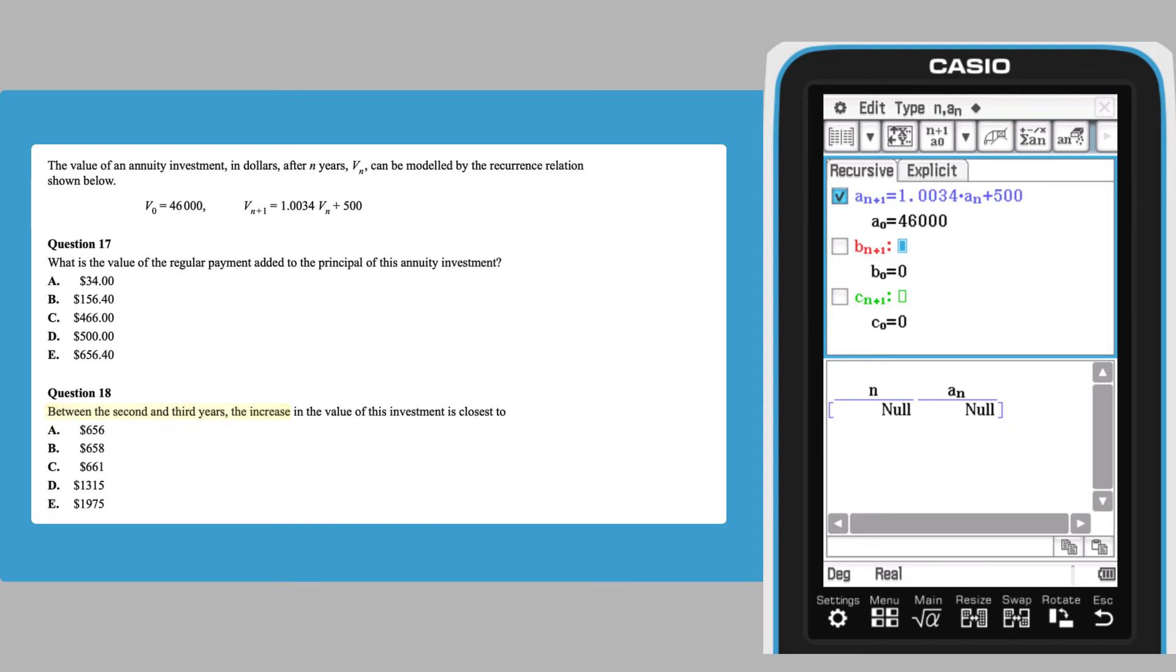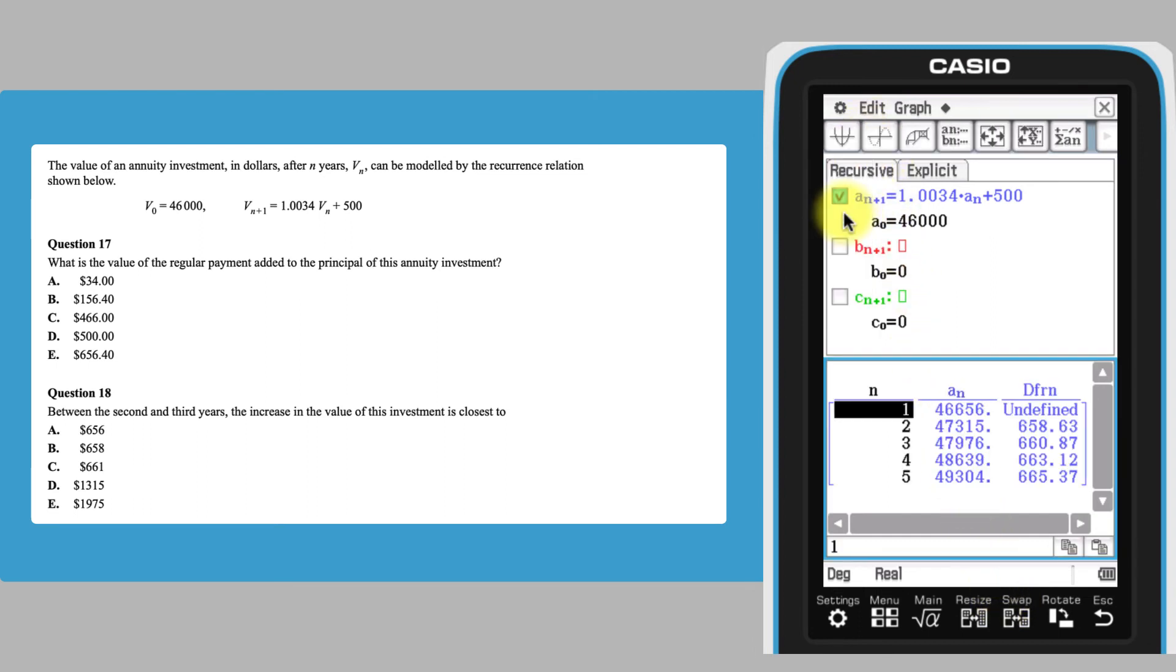We can generate these differences as part of our table by tapping the drop-down arrow next to the table icon and selecting the second option that shows that the differences between successive values will be calculated.